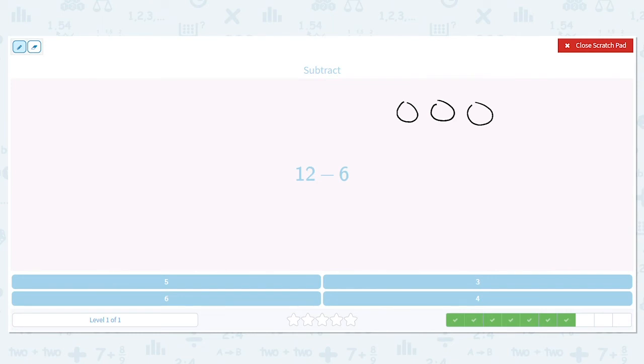12 minus 6: 1, 2, 3, 4, 5, 6, 7, 8, 9, 10, 11, 12. How many am I subtracting? 6: 1, 2, 3, 4, 5, 6. Why am I crossing them all out in one row? Why am I not skipping around?